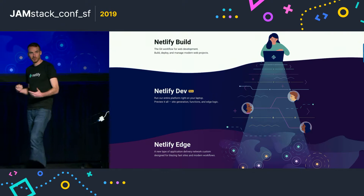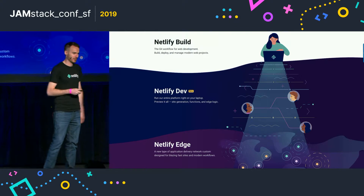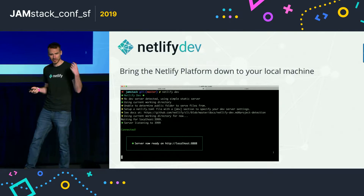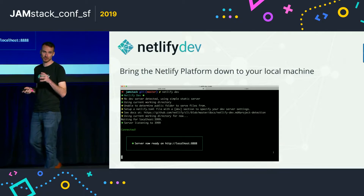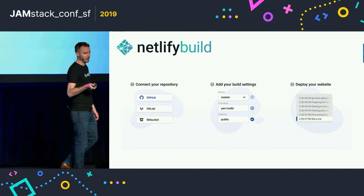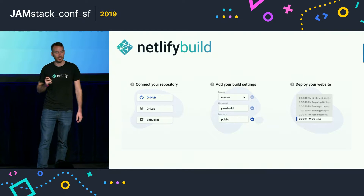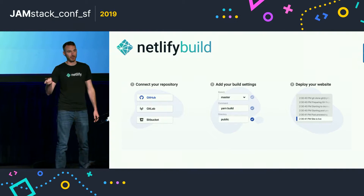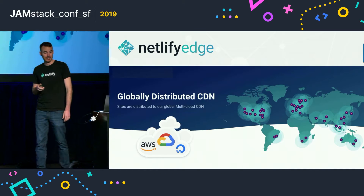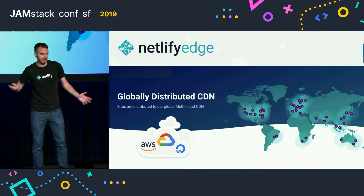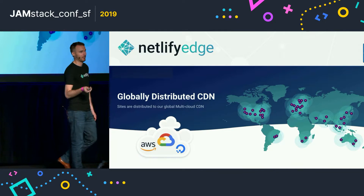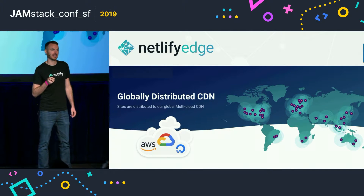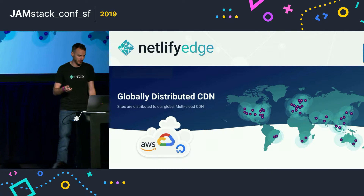Netlify, the platform we all know and love, is made up of three components: build, dev, and edge. Dev is bringing the Netlify platform down onto your local machine and your local development environment. Build is connecting your Git repo, giving us your build command, and we'll set up that CI/CD pipeline for you and deploy whenever there's a commit. Edge is our distributed CDN that puts your app or site as close to the user as possible to deliver the fastest experience.